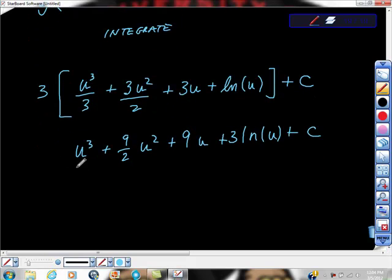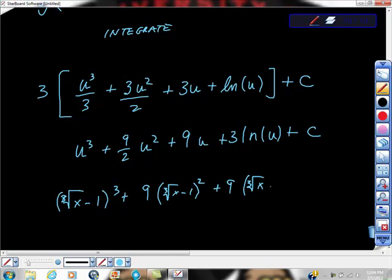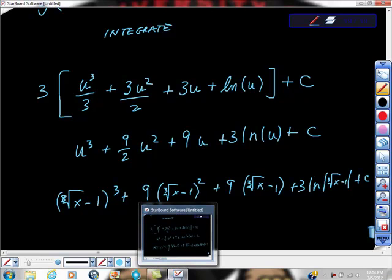Finally, what? Substitute. And u was equal to the cube root of x minus 1. Cube root of x minus 1 cubed plus 9 times cube root of x minus 1 squared plus 9 times cube root of x minus 1 times. I'm sorry. Plus 3 ln of cube root of x minus 1. Did I miss a line? Which one? Here? Sorry. Good job. Thanks.